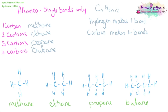You need to know the names and be able to recognise the pictures of these alkanes. Their formulas follow the general formula CnH₂ₙ₊₂: methane has one carbon and four hydrogens; ethane has two carbons and six hydrogens; propane has three carbons and eight hydrogens; and butane has four carbons and ten hydrogens.